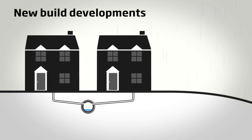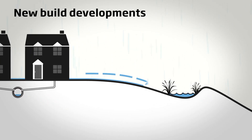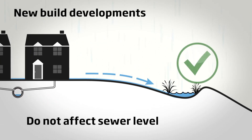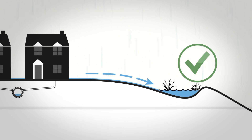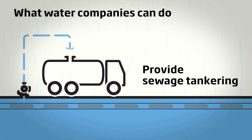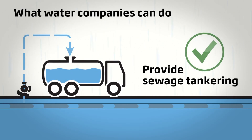However, we can monitor new developments to agree suitable points of connection to the sewer, ensuring that rainwater from roofs and driveways drain away in the correct place. Tankering small volumes from strategic points on the sewer network can relieve pressure and reduce the risk of foul sewer flooding.